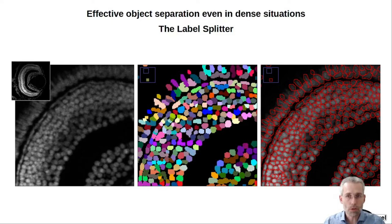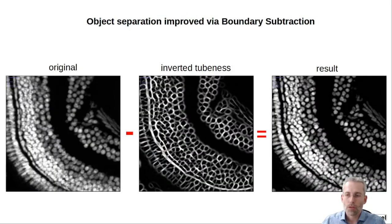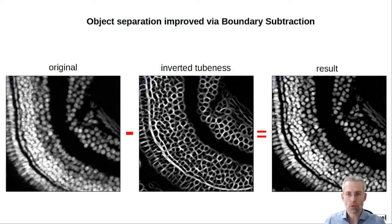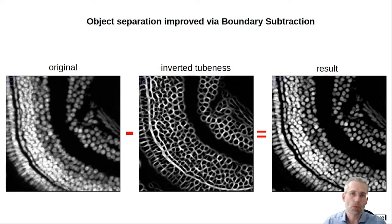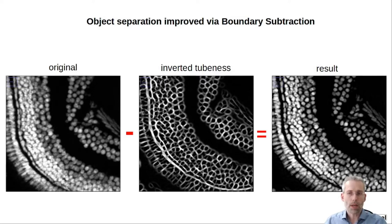So what is the difference to other tools? The separation works especially well because, dependent on the method, an inverted tubeness filter is used — a Hessian-based tubeness detection is run. These tubeness structures are then subtracted from the original image and, similar to an unsharp mask, this will actually carve out the objects more specifically, enabling better detection on the one hand, and better separation of those objects from each other on the other.